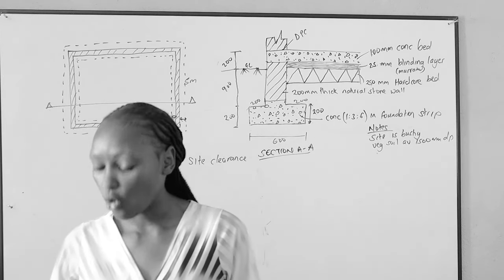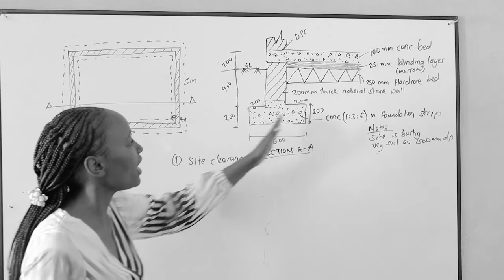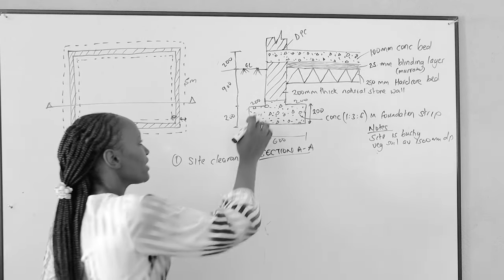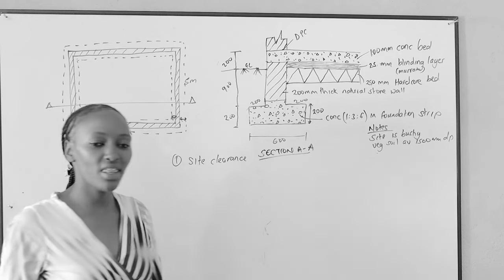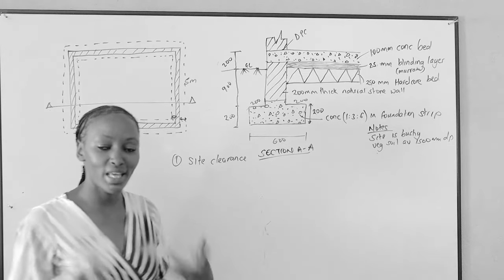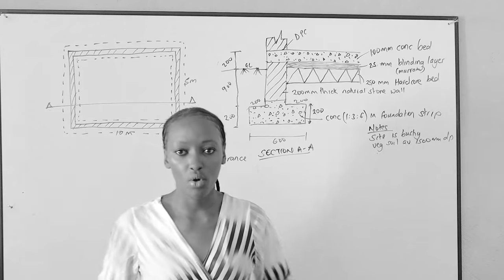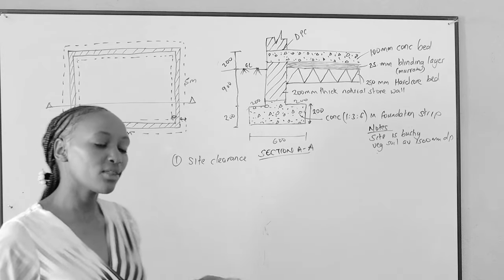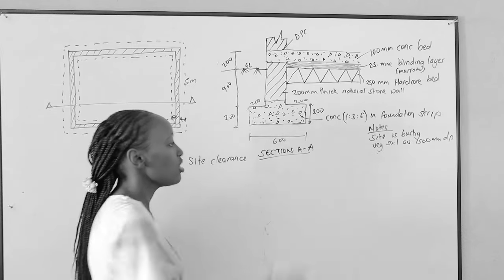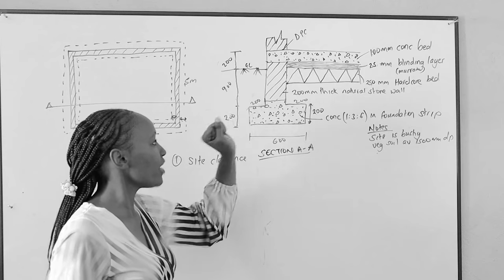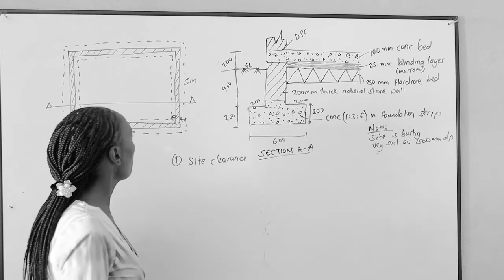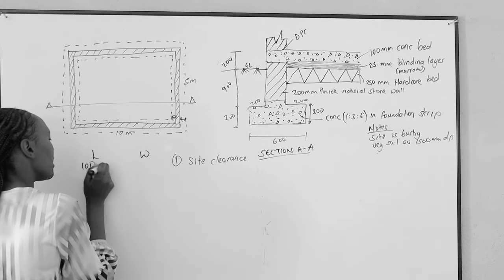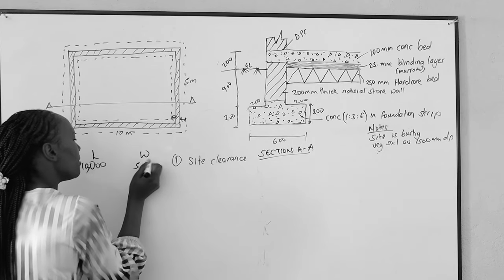In other books you find it called the working space, because when building the wall the skilled laborers will stand on that space. So when doing site clearance, we consider all the area the house will occupy and add the foundation spread. The length was 10,000mm and the width was 5,000mm, written in millimeters because workings are done in the description column using millimeters.